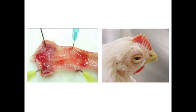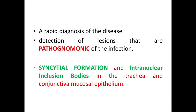These pictures show the characteristic findings in the mild forms of the disease. The left picture shows hemorrhagic areas in the upper trachea and larynx, and the right one shows mild conjunctivitis. A rapid diagnosis can be confirmed by the detection of lesions that are pathognomonic of the infection.